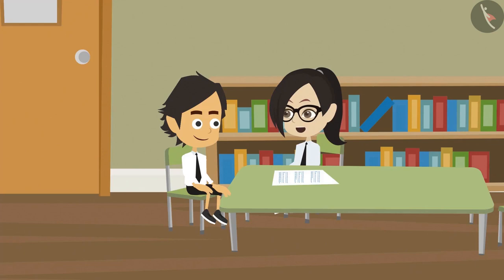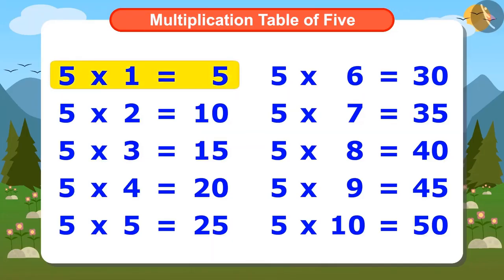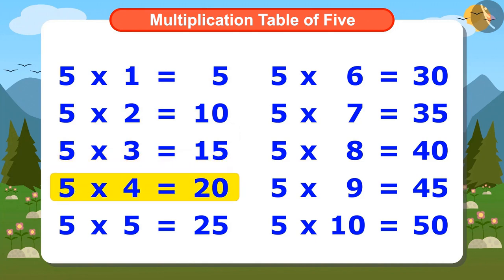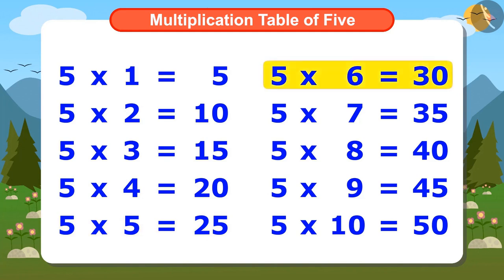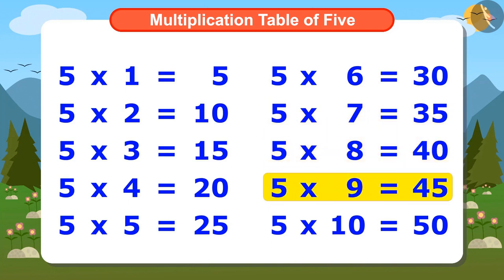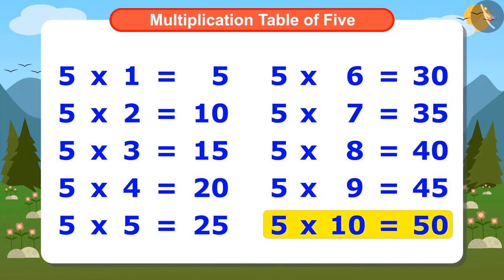Now I will try to memorize the Multiplication Table of 5 by reciting it. 5 ones are 5, 5 twos are 10, 5 threes are 15, 5 fours are 20, 5 fives are 25, 5 sixes are 30, 5 sevens are 35, 5 eights are 40, 5 nines are 45, 5 tens are 50.